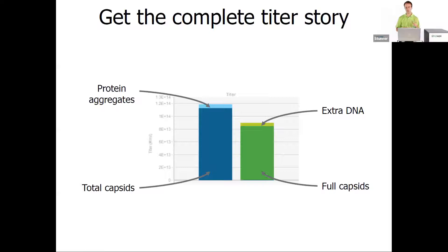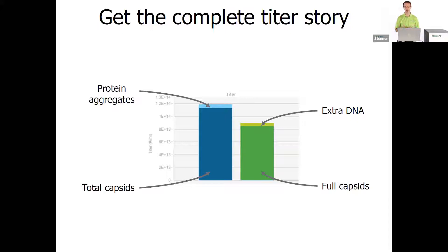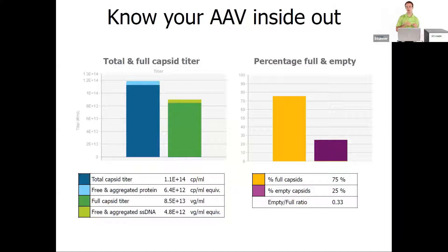The end result is the complete titer story. The blue column represents the protein world — total protein measured by UV-Vis. By combining DLS with UV-Vis data, we break that down into protein from aggregates (light blue at the top) and from total capsids (dark blue at the bottom). On the right in green is the DNA world, where total DNA from UV-Vis is broken down into extra DNA and full capsids. This is how you know your AAV inside and out — total capsids, full capsids, empty capsids, free and aggregated protein, extra DNA — and from those you can calculate empty-full ratio or percent full.